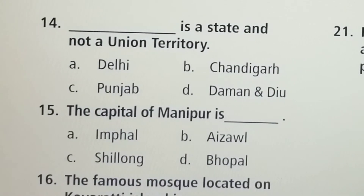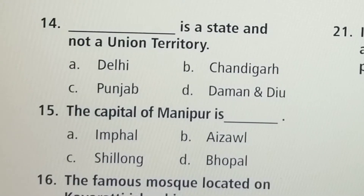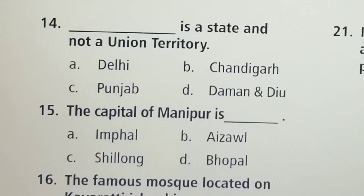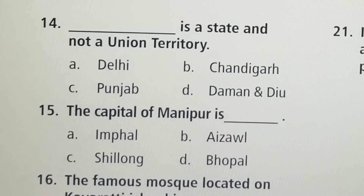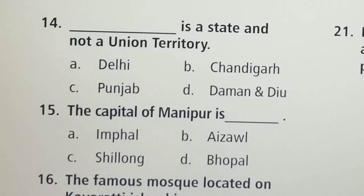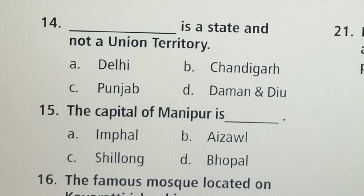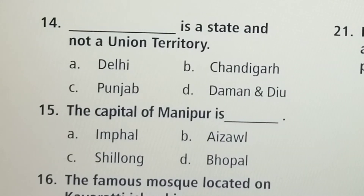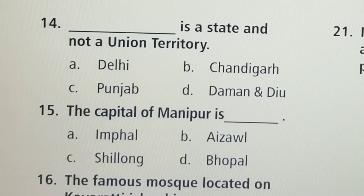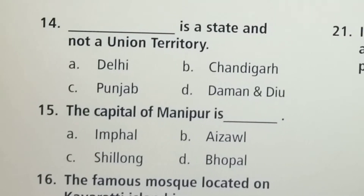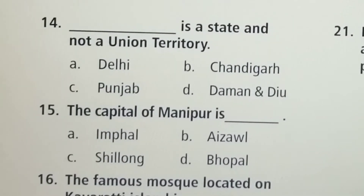Next question: Dash is a state and not a union territory. Option A: Delhi, Option B: Chandigarh, Option C: Punjab, Option D: Daman and Diu. Option C, Punjab, is the correct answer.